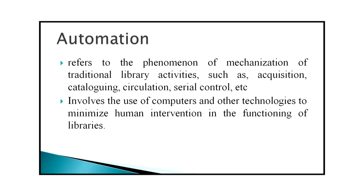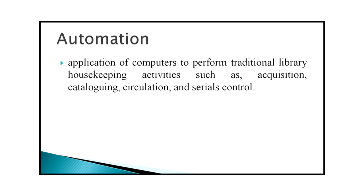When libraries use computers to provide or exchange services, we say it is an automated system. Automation refers to the mechanization of traditional library activities such as acquisition, cataloging, circulation, serial control, etc. Automation involves the use of computers and other technologies to minimize human intervention in the functioning of libraries. In other words, automation is the application of computers to perform traditional library housekeeping activities such as acquisition, cataloging, circulation, and serials control.